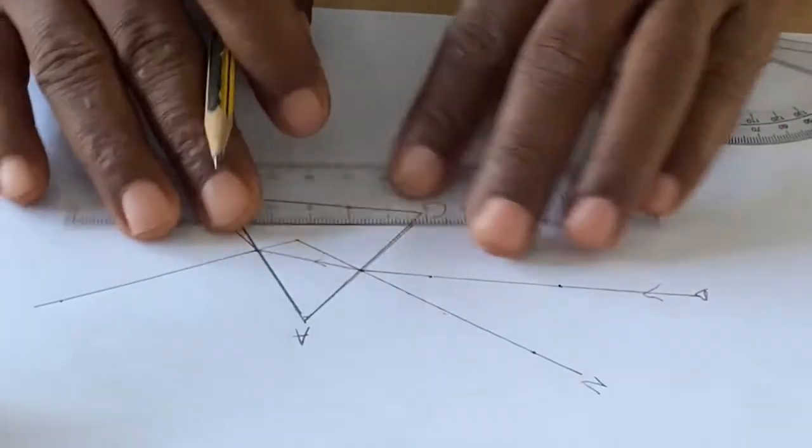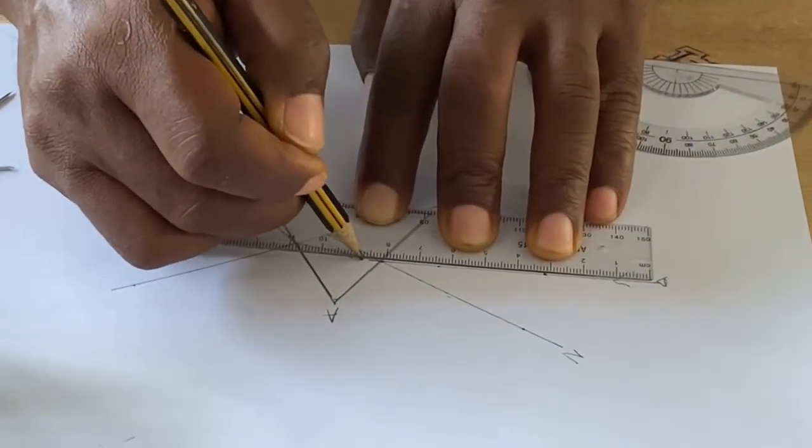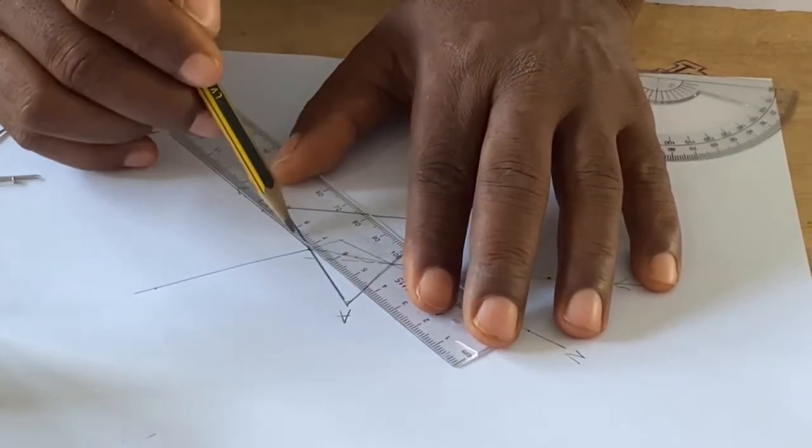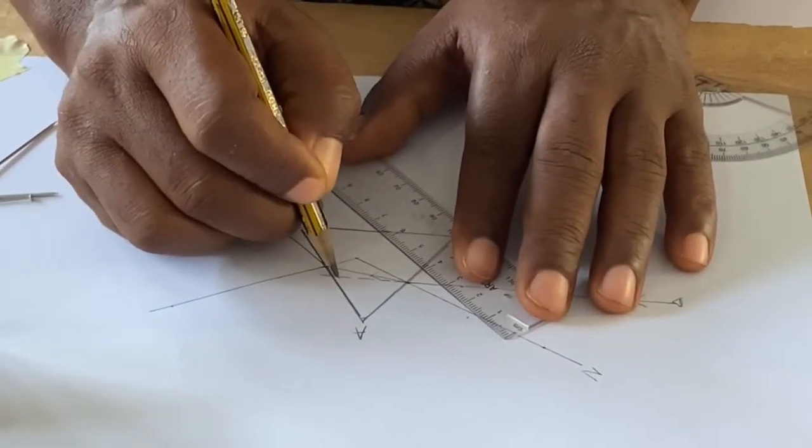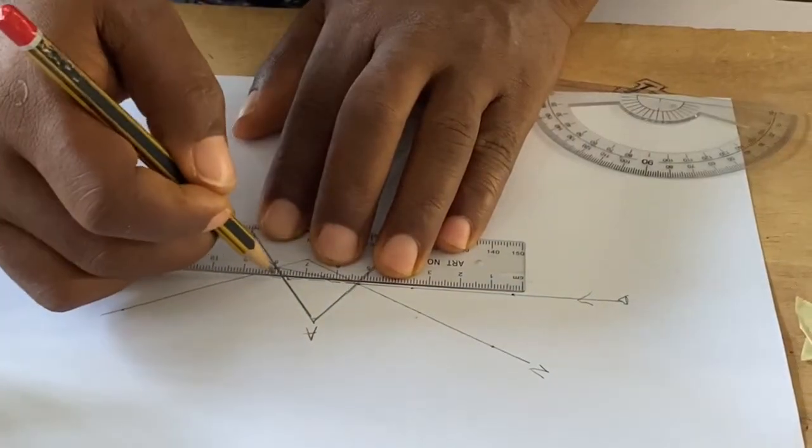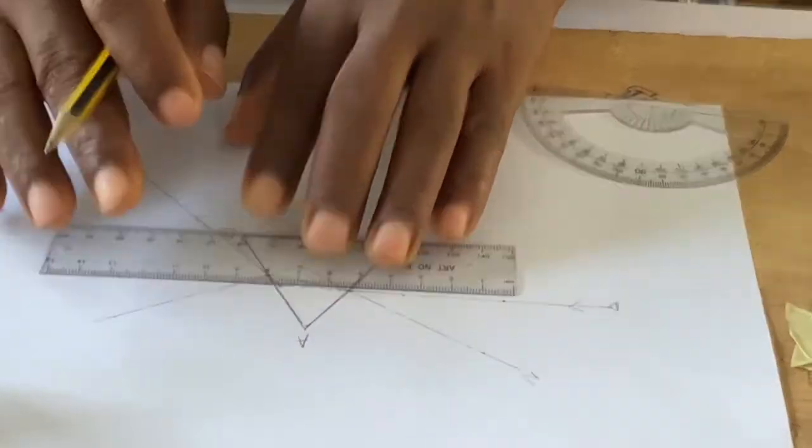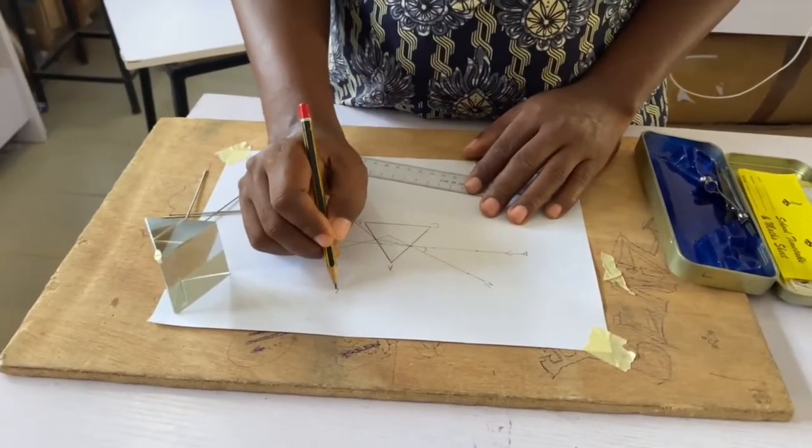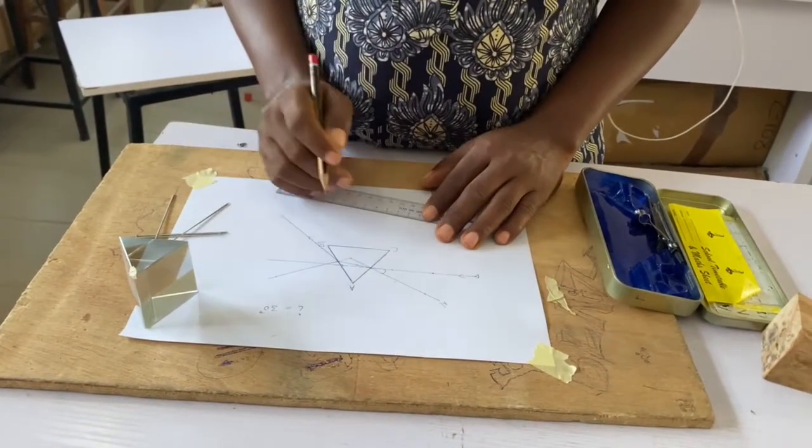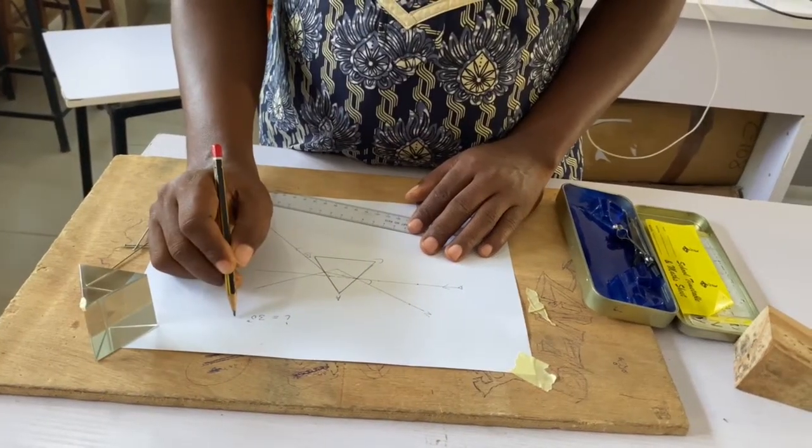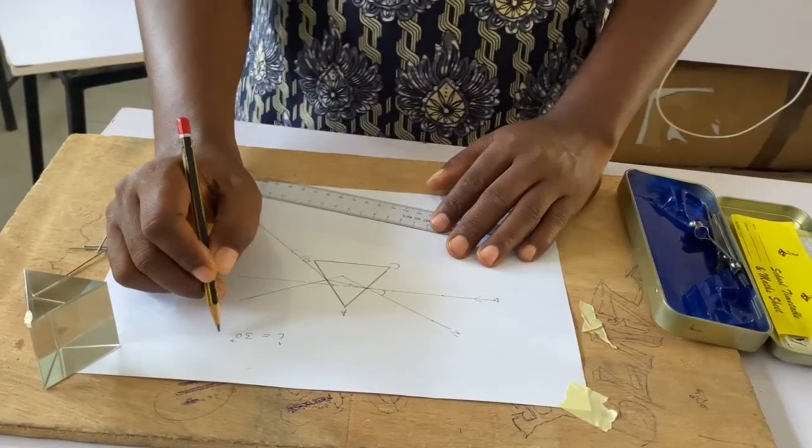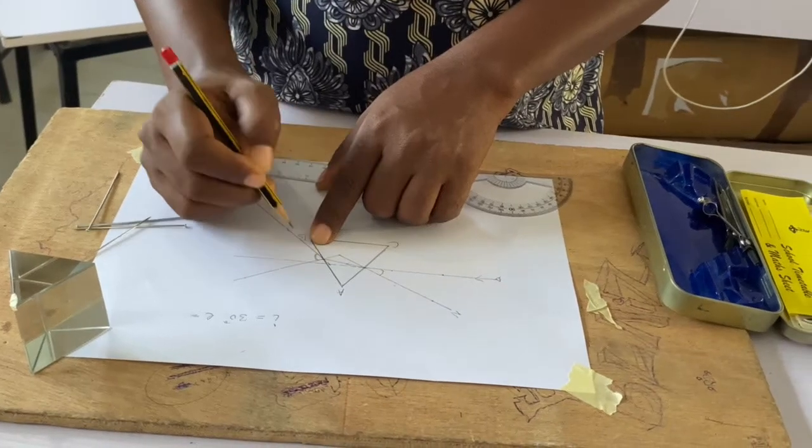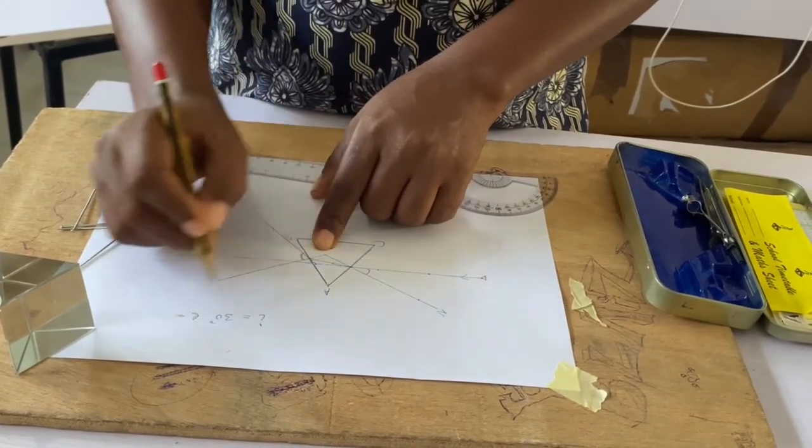I will use my ruler to trace out the incident ray and also trace out the emergence ray to meet at a point. That point where they meet is my angle of deviation, D. I have my incident ray, I, to be 30 degrees. I will now measure out my emergence angle, which will be this angle between the normal and the emergence line, and also measure out the angle of refraction.